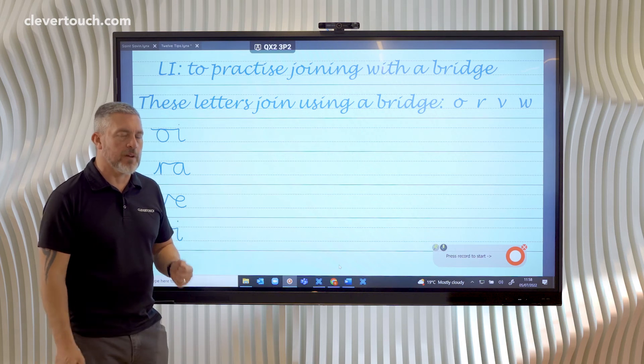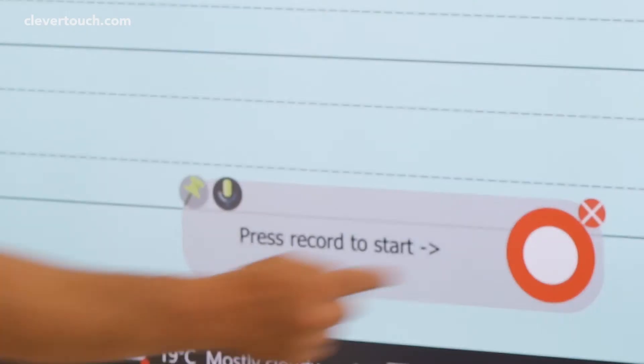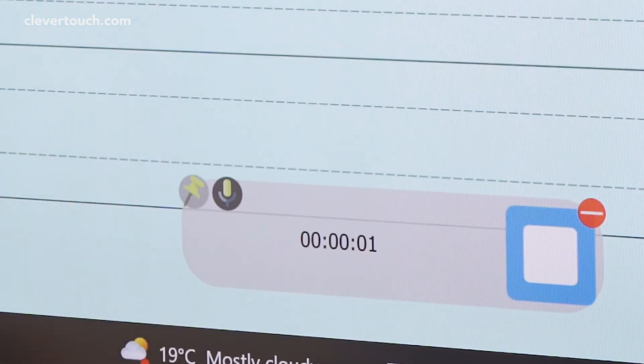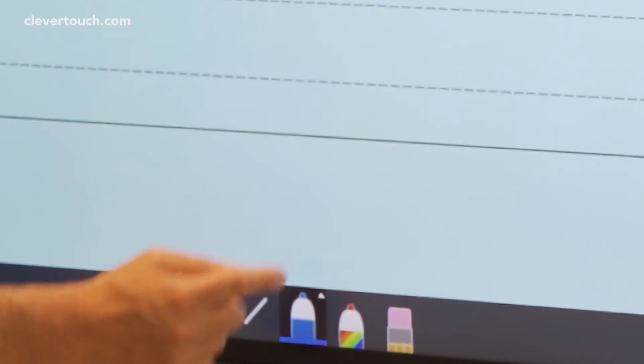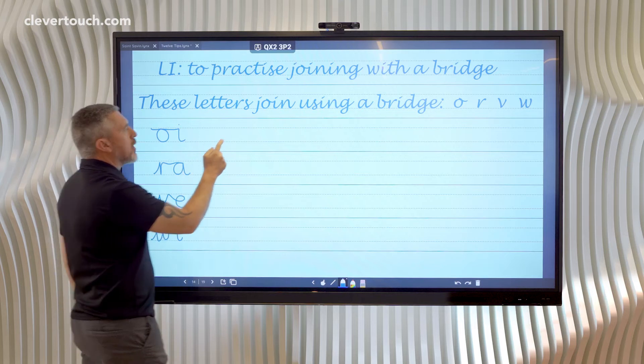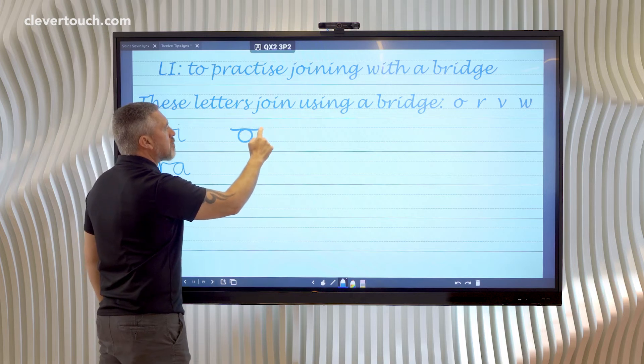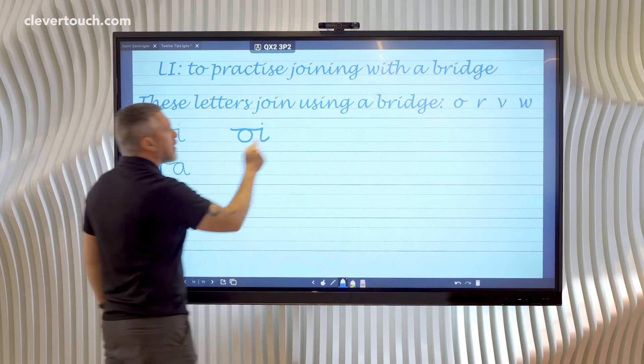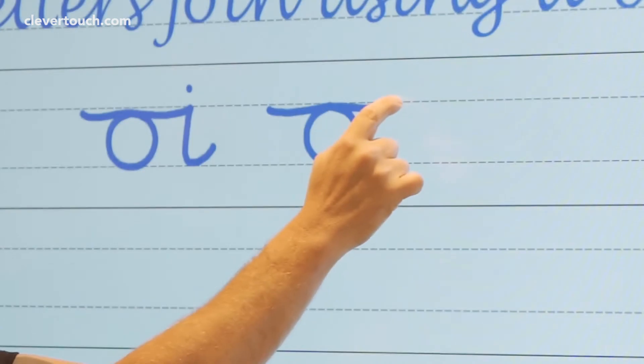The first join is an O to the letter I. So we go across and we start our O, use the bridge to go across and join to the I. We need to make sure that the two letters aren't too close together and the bridge separates them.